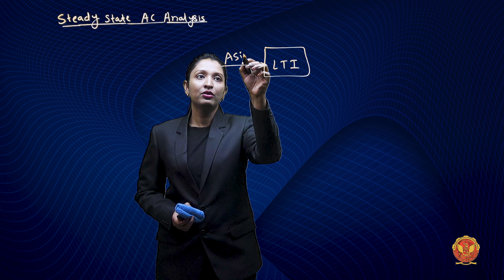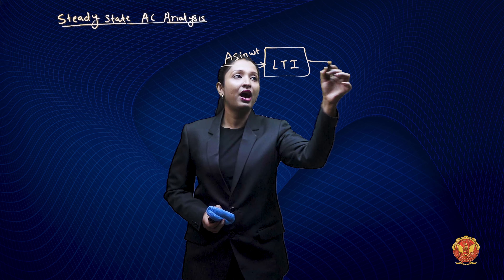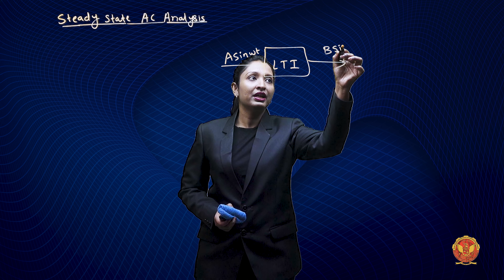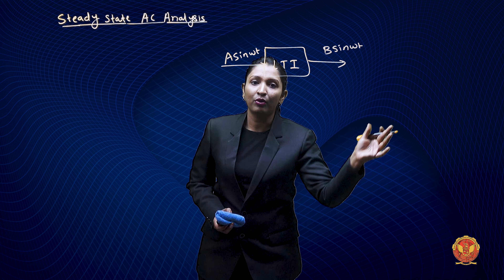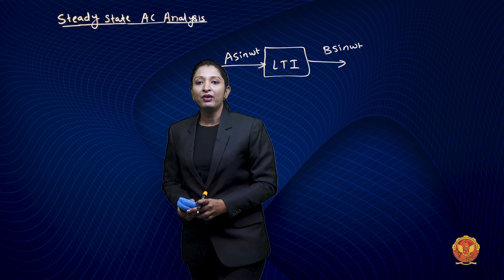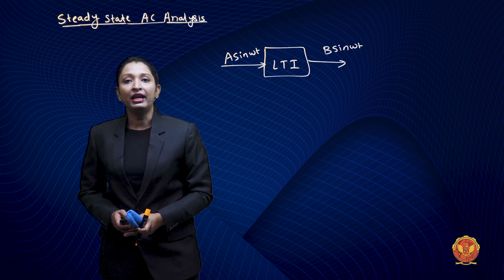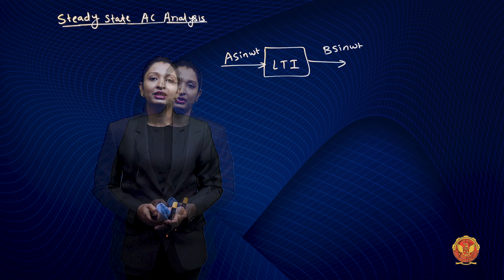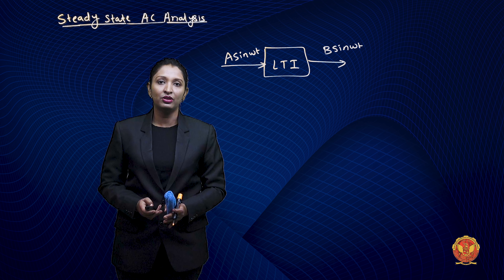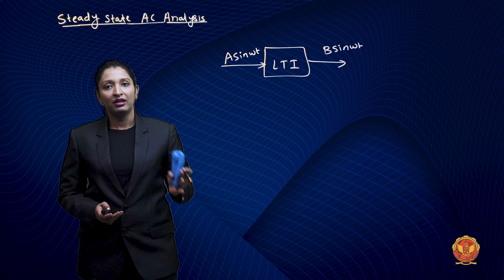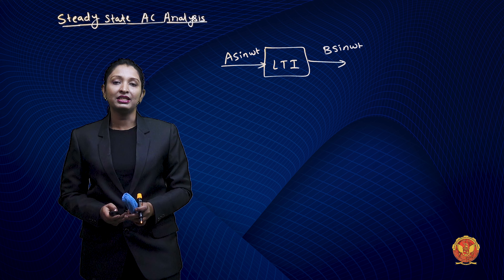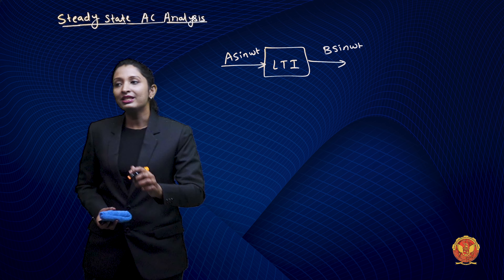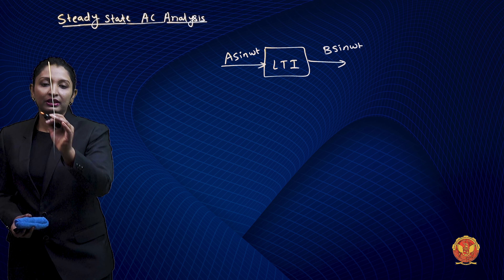If we have a sinusoidal input — sinusoidal means sine or cosine — if we give a sinusoidal input to a linear time-invariant system, we can get a sinusoidal output as well. The mathematical handling of sinusoidal signals is easy. That's why we prefer sinusoidal for generation and transmission, and we also do the analysis of systems with AC signals using sinusoidal.